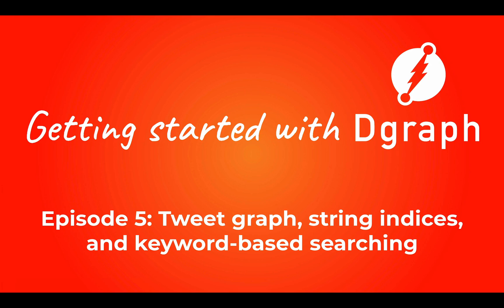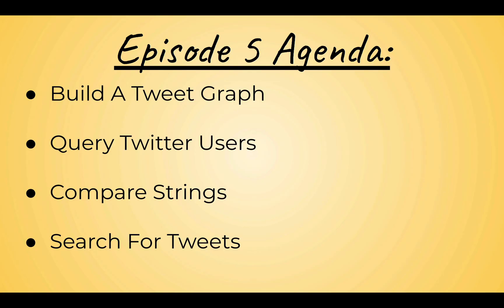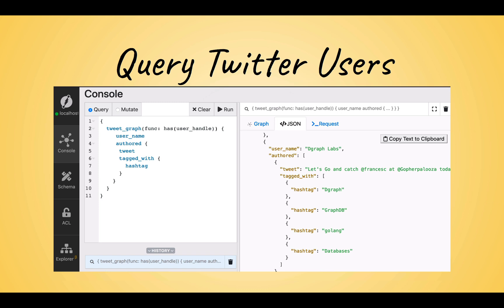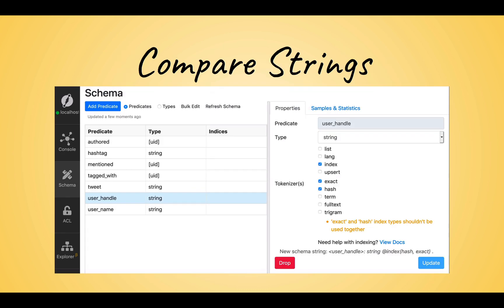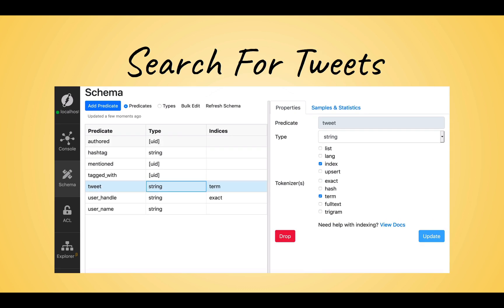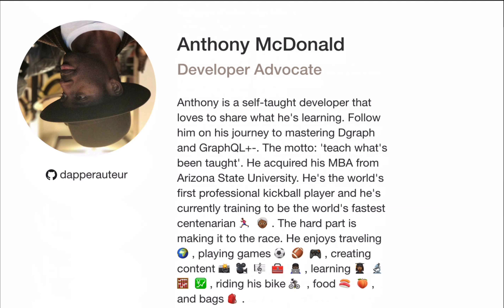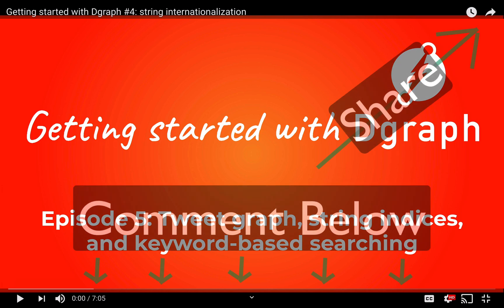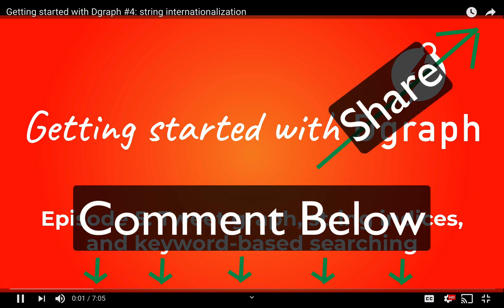Welcome to episode 5 of the getting started with the graph tutorial series. In this episode we'll build a tweet graph, use string indices to query Twitter users using the hash index, compare strings using the exact index, and search for tweets based on keywords using the term index. I'm Anthony, a developer advocate for DGraph, and it's my goal to learn how to use DGraph GraphQL+- and share the learning journey with you.